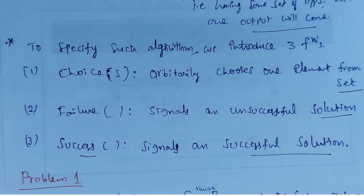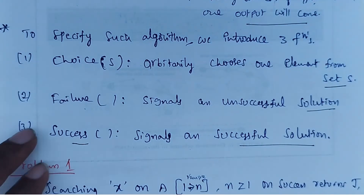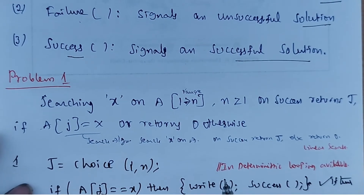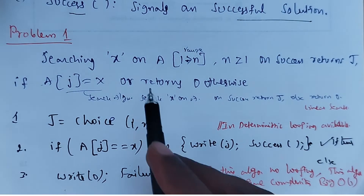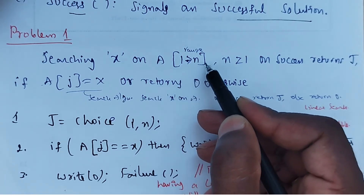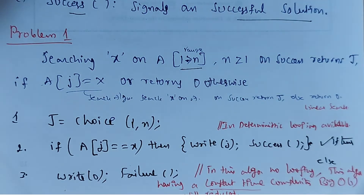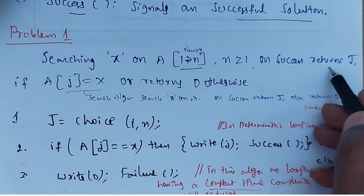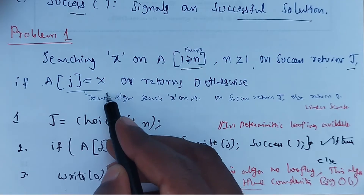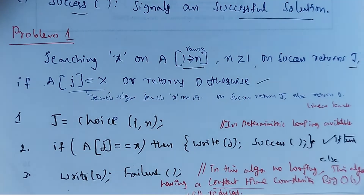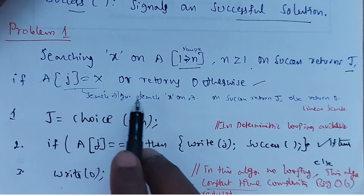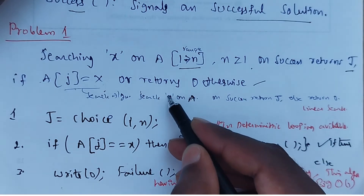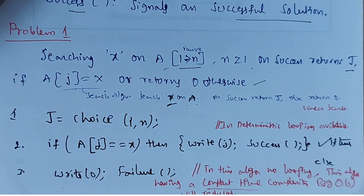We will see one example problem for a non-deterministic algorithm. The problem is: searching x on array A of range 1 to n, where n is greater than or equal to 1. On success it returns j if A[j] equals x, else it returns 0. The first step is j equals to choice of 1 to n — meaning instead of deterministic looping, we use choice. Then if A[j] equals x, then write j.